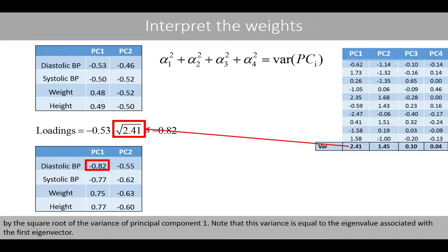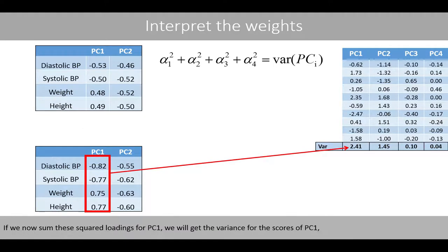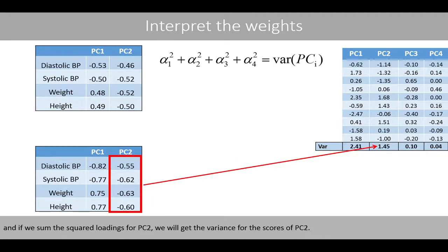Note that this variance is equal to the eigenvalue associated with the first eigenvector. If we now sum the squared loadings for PC1, we'll get the variance for the scores of PC1. And if we sum the squared loadings of PC2, we'll get the variance of the scores of PC2.